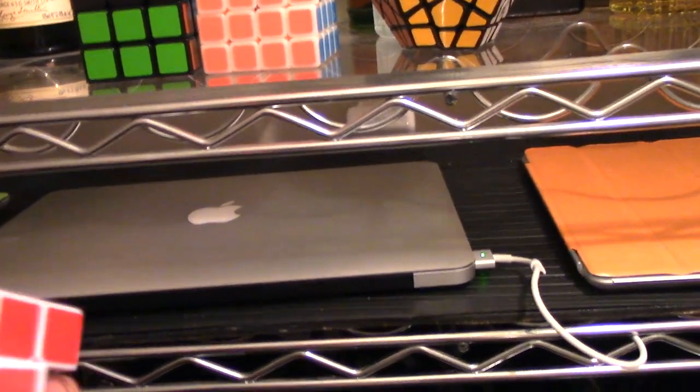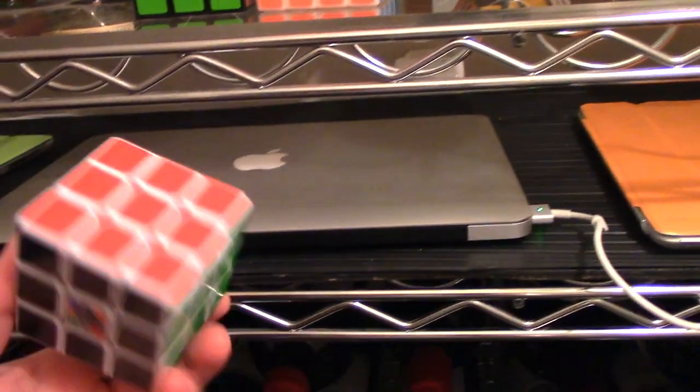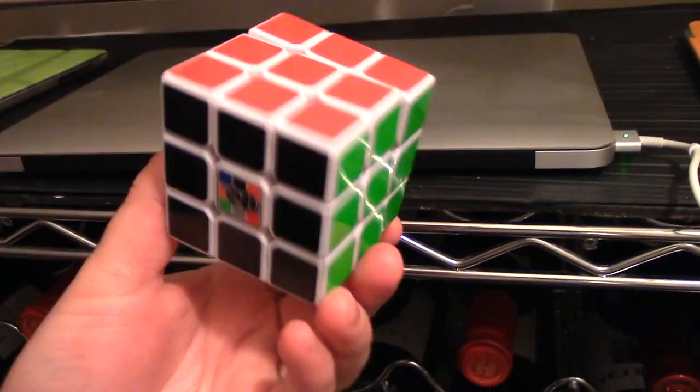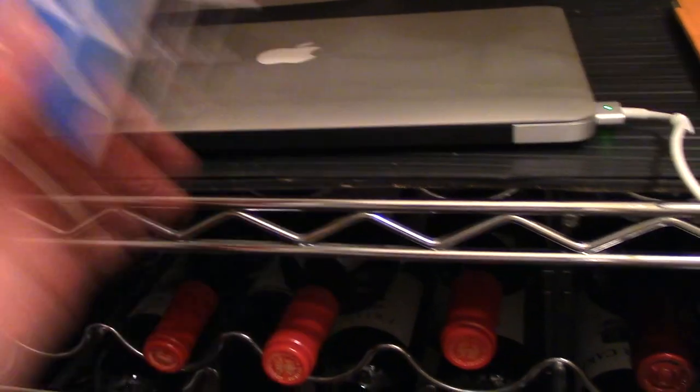Here is my Zianchi 3x3. Actually, I take it back. This is my Wei Long 3x3 with the same scheme and my custom G stickers.